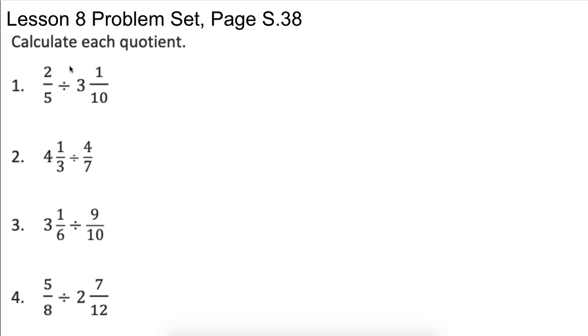So let's go ahead and look at this first one. We have two-fifths divided by three and one-tenth. We want to know how many tenths are in that. We can figure out how many tenths are in that when we go three times ten and then add to that. So this would become 31 tenths. Ten times three plus one would be 31 tenths.